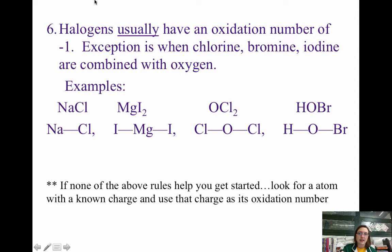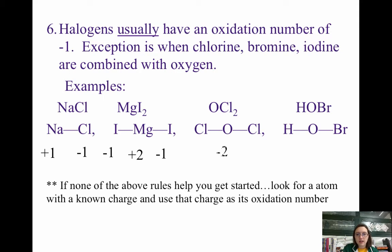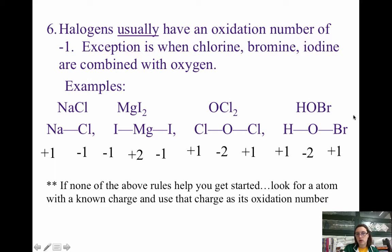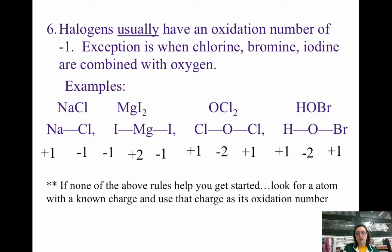Halogens usually have an oxidation number of −1. The exception is when chlorine, bromine, and iodine are combined with oxygen, because in that case oxygen is the more electronegative atom and will carry the negative charge. Oxidation numbers typically correspond to the charge an atom forms when it becomes an ion, though sometimes you get unusual ones like chlorine or bromine being positive. If none of these rules help you get started, look for an atom with a known charge and use that as its oxidation number.